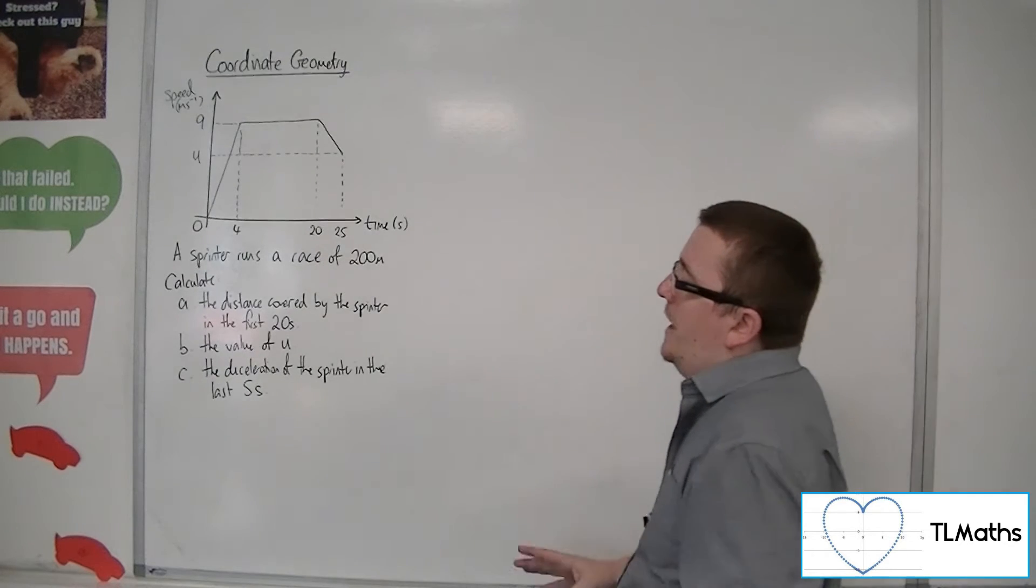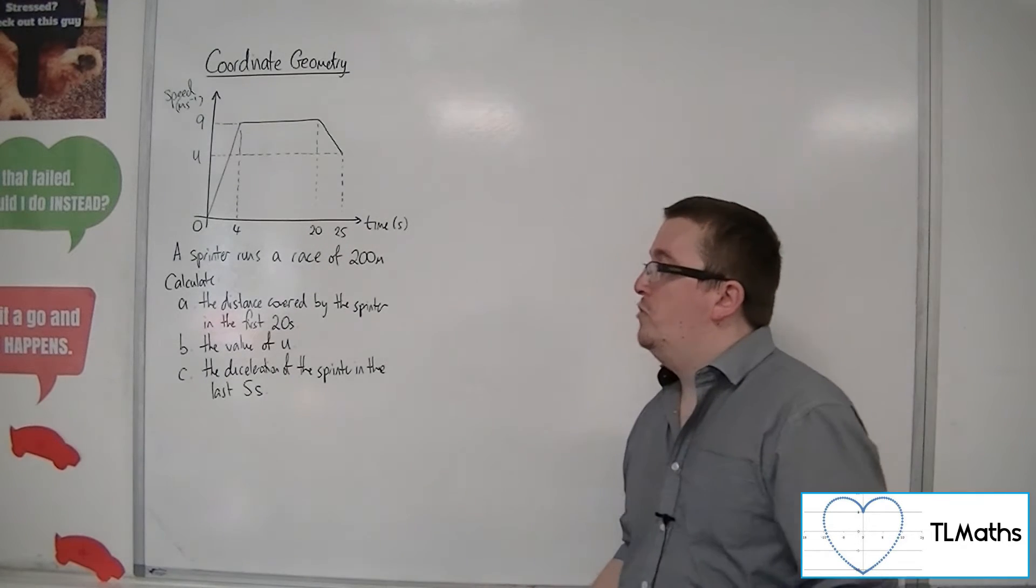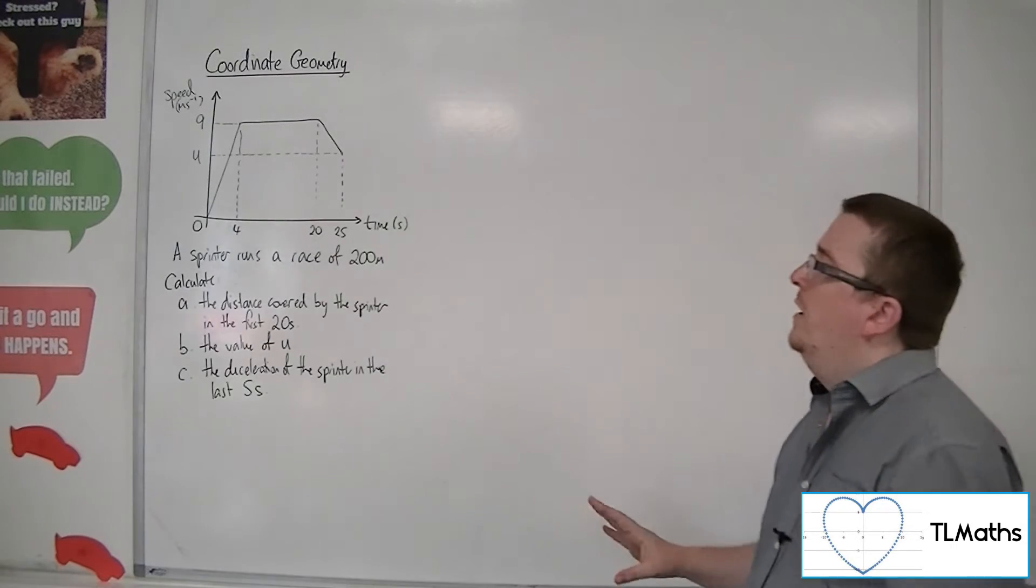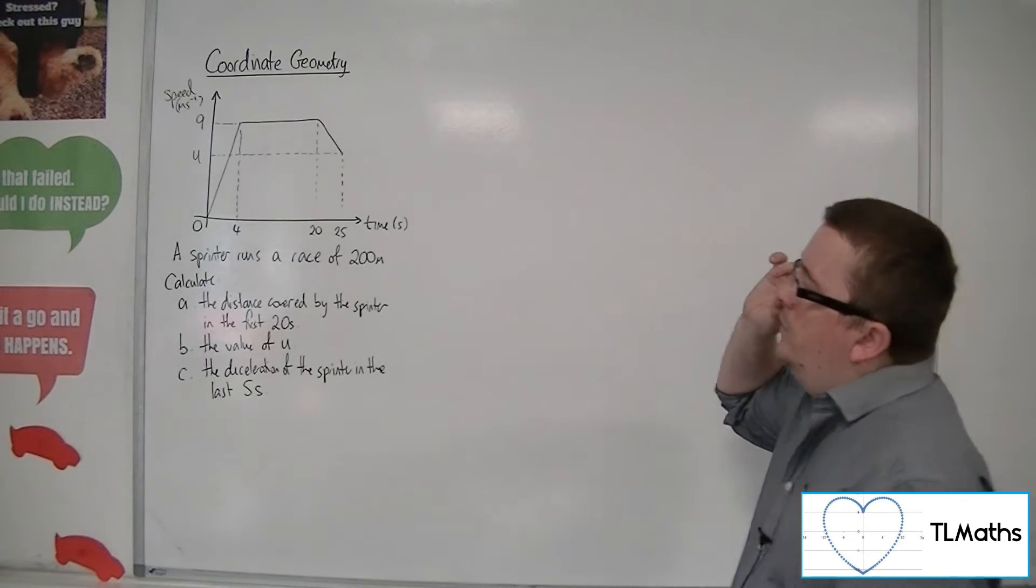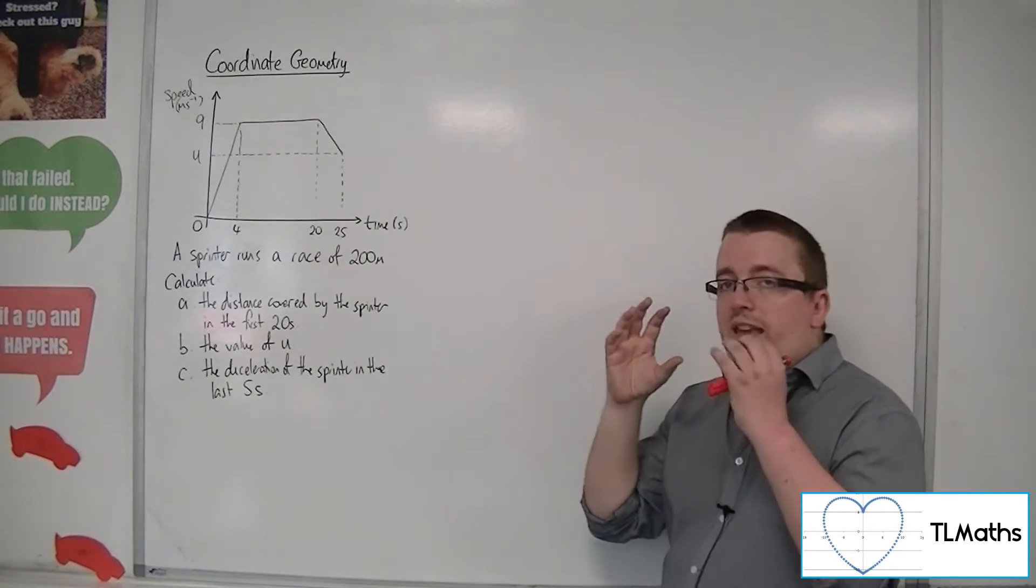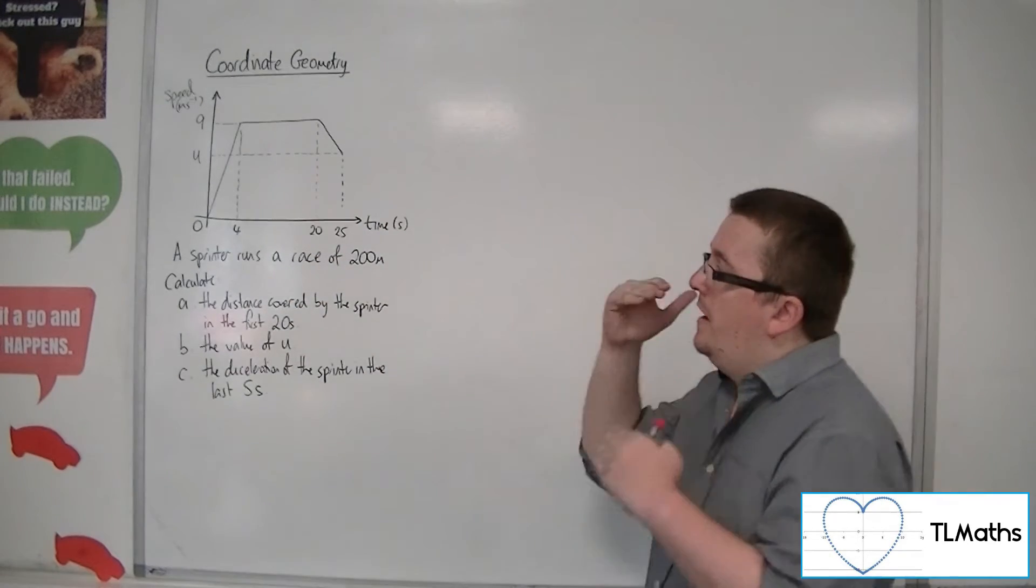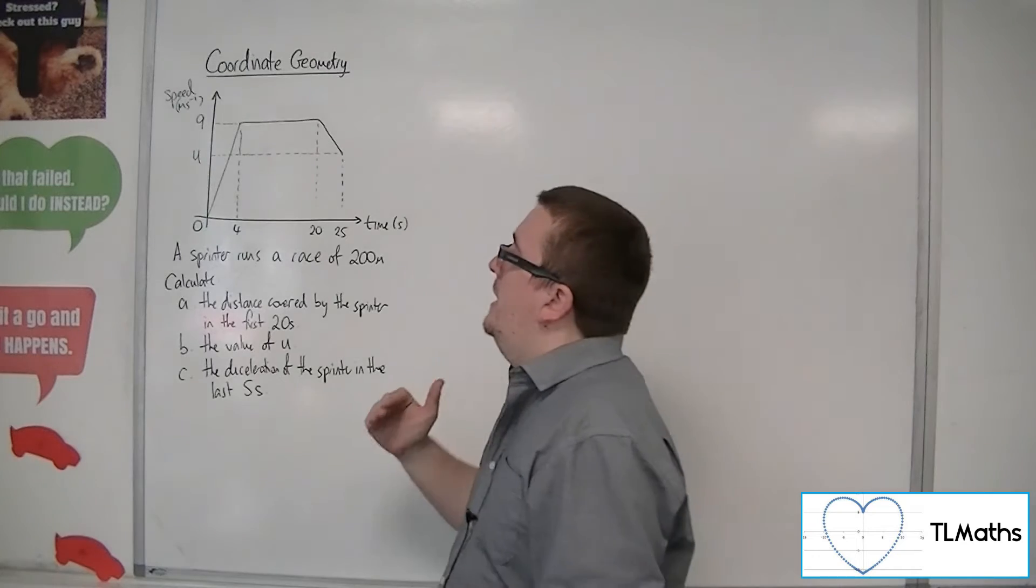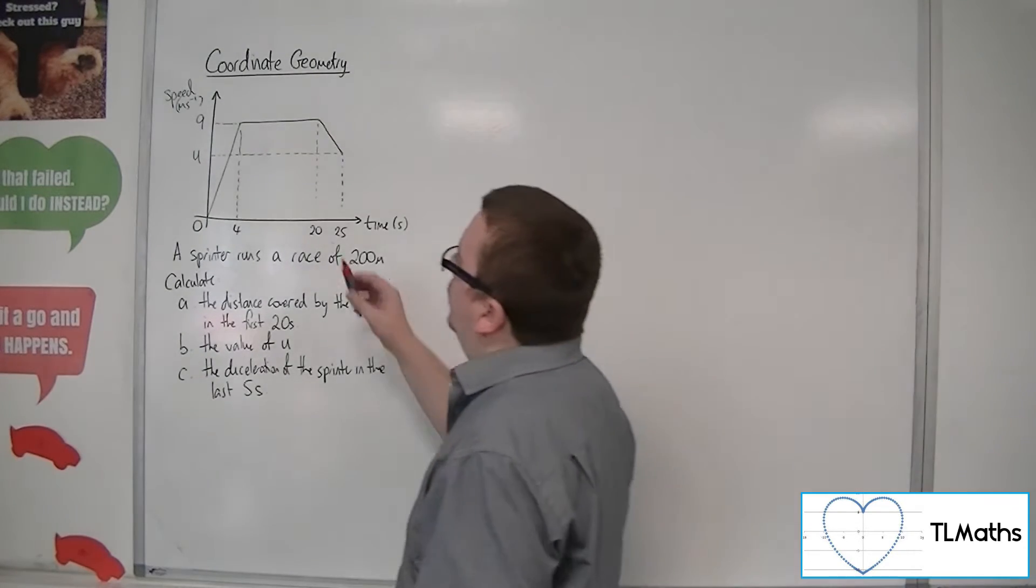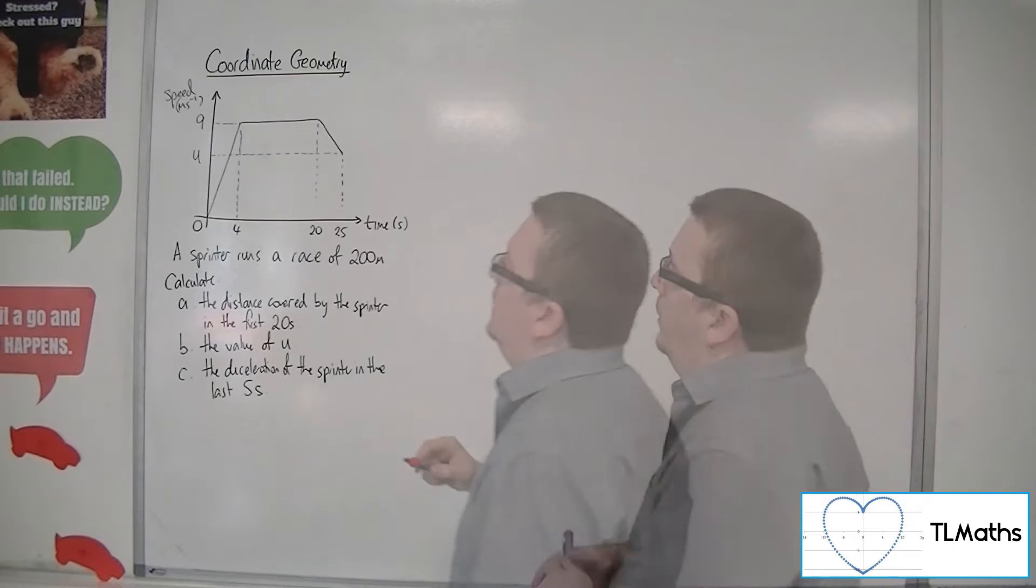Firstly, we need to calculate the distance covered by the sprinter in the first 20 seconds. The distance in a speed-time graph is the area under the graph, the area between the graph and the x-axis. So effectively we're looking for the area of this trapezium.